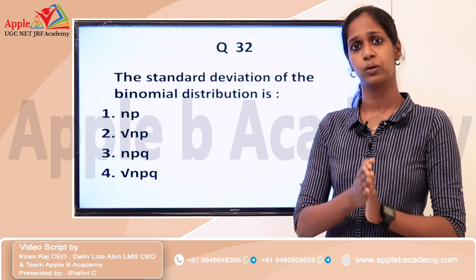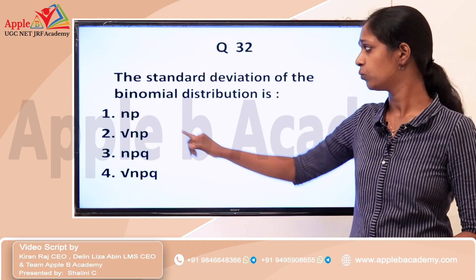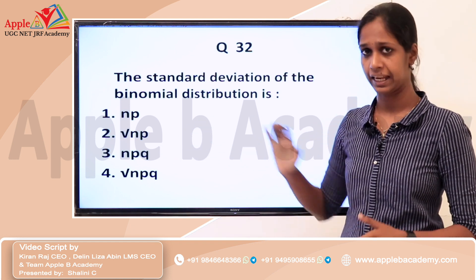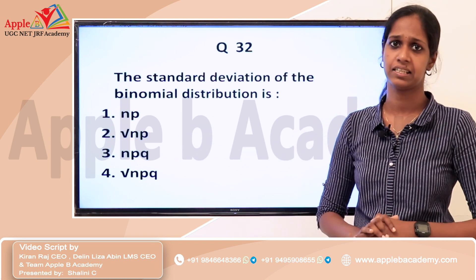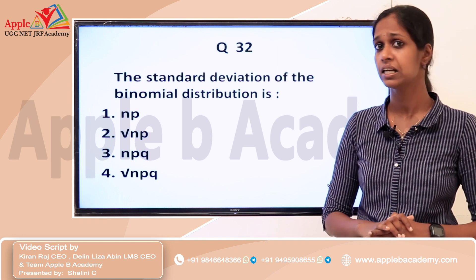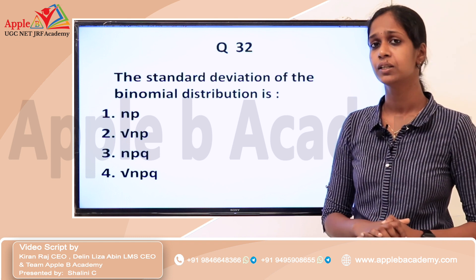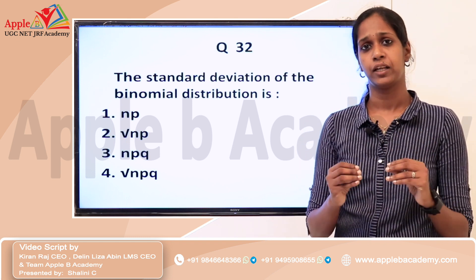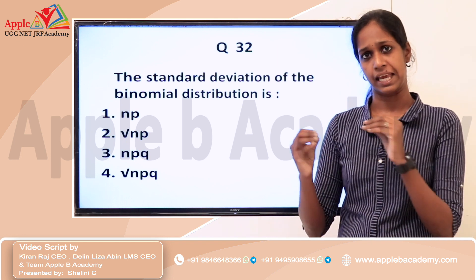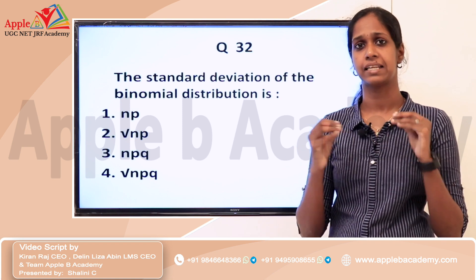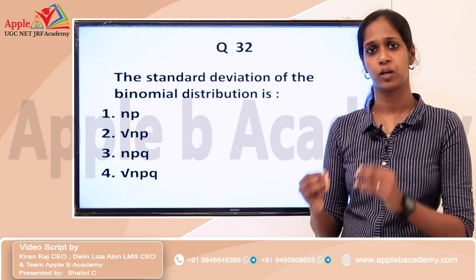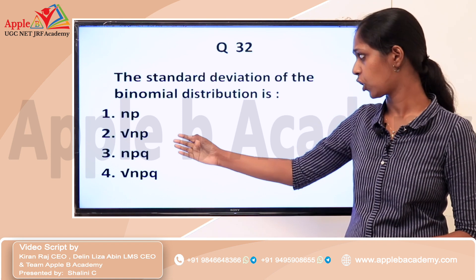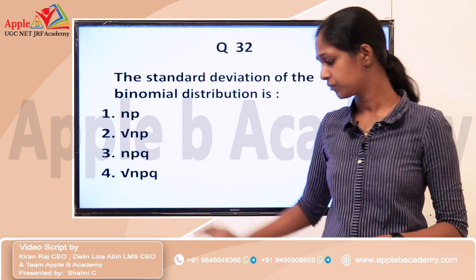The total value of probability is always equal to 1, so P plus Q equals 1. N is the number of items in the sample. The mean of a binomial distribution is NP and the standard deviation is √NPQ. So the answer is option 3.